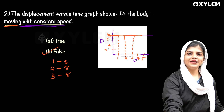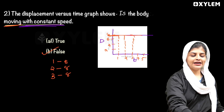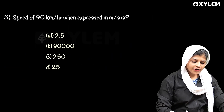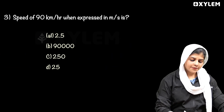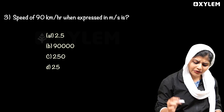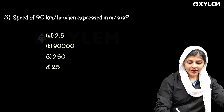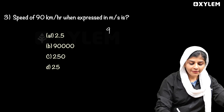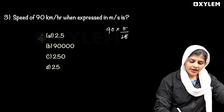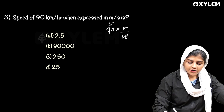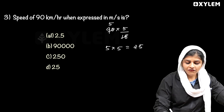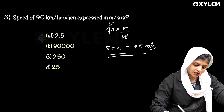Next question: speed of 90 km per hour when expressed in meters per second. It is very simple. We multiply by 5 by 18: 90 times 5 by 18, so 5 into 5 equals 25 meters per second.